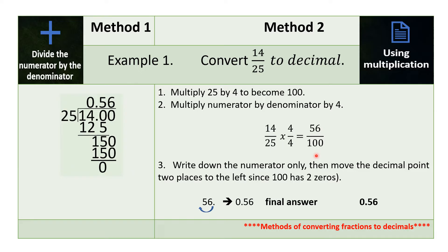Next step is to write down the numerator, then move the decimal point two places to the left, since a hundred has two zeros. So we have 56 — the decimal place is at the right, so we move it two places to the left: 1, 2. So 56 becomes 0.56. Our final answer is 56 hundredths.